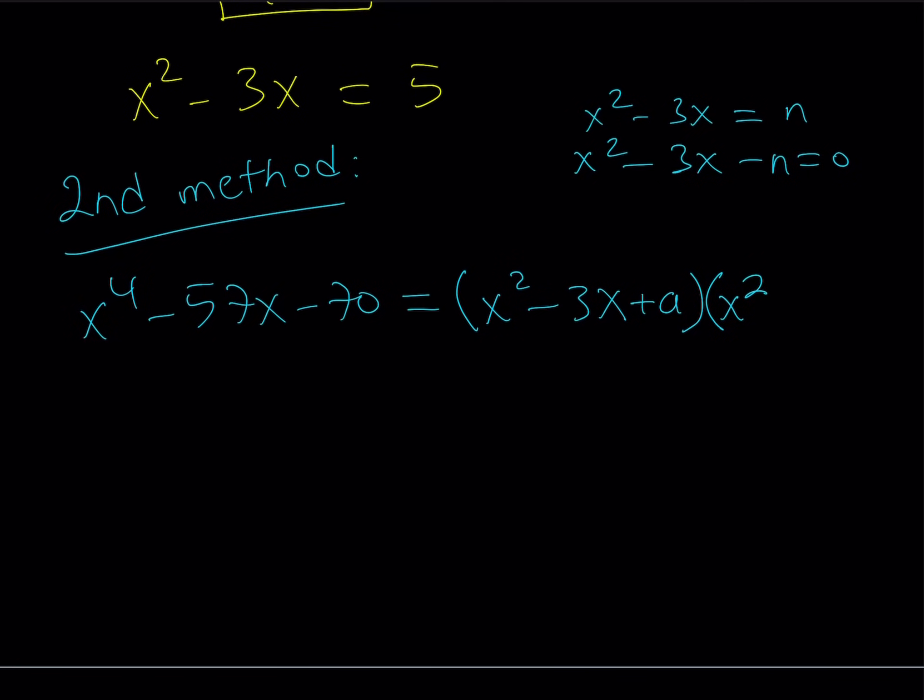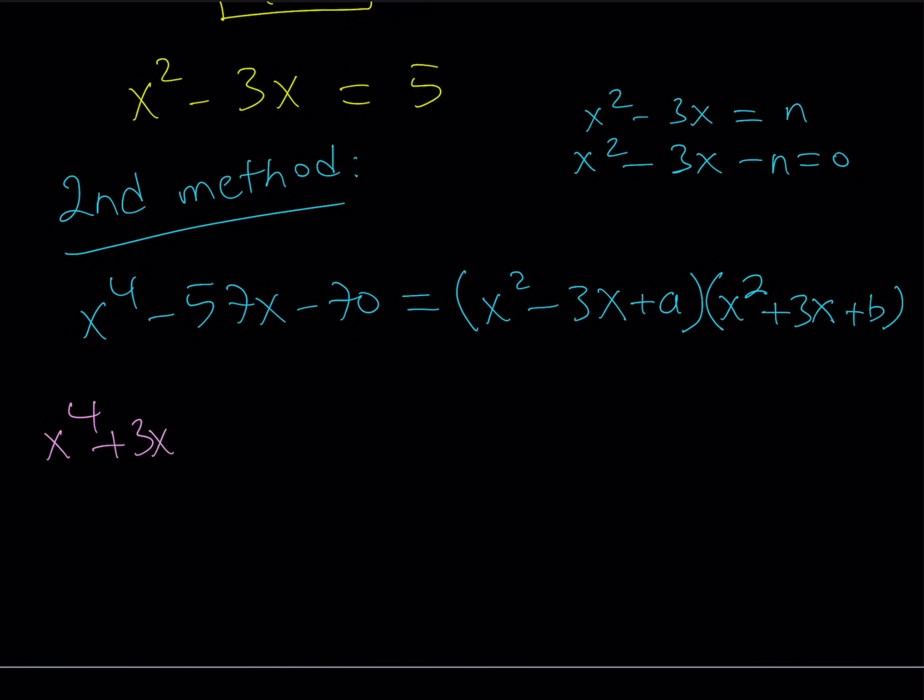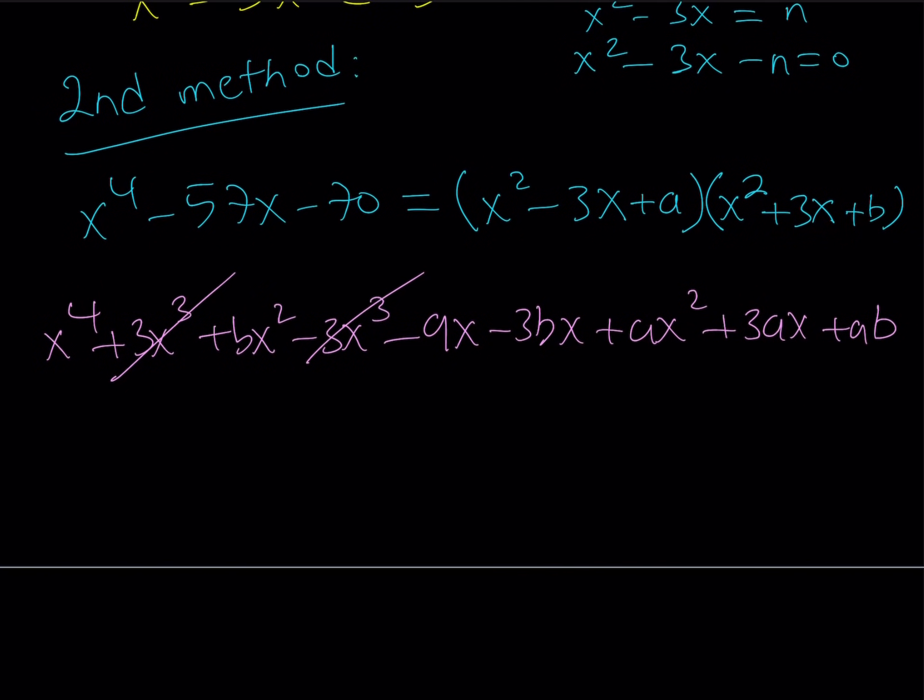And notice that we're missing the cubic term. That's why the coefficients of x have to be opposite, so that when you multiply x² by x, they cancel out. Make sense? And let's go ahead and call the second constant b here. I don't know what it is, but I'll find out. Let's go ahead and distribute everything on the left-hand side. And we get x⁴ + 3x³ + bx² - 3x³ - 9x² - 3bx + ax² + 3ax + ab. We get nine terms, so that's a mouthful.